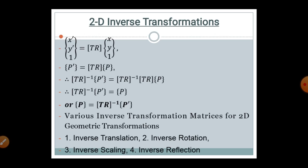In translation, if the point is moved from X to Y in one direction, then the inverse translation moves it in the opposite direction — from left to right instead of right to left. This opposite-direction movement is the basic concept behind inverse transformations: inverse translation, inverse rotation, inverse scaling, and inverse reflection.